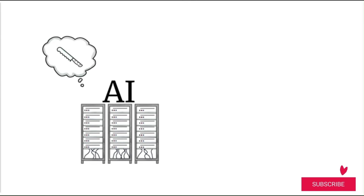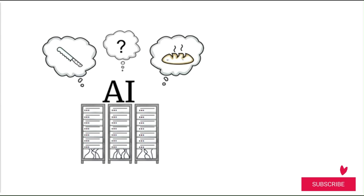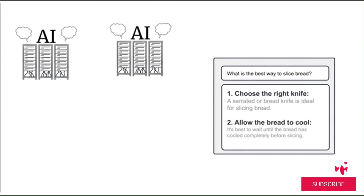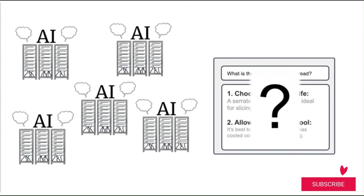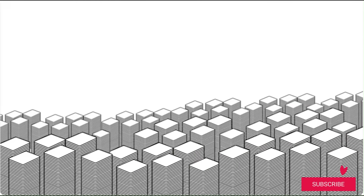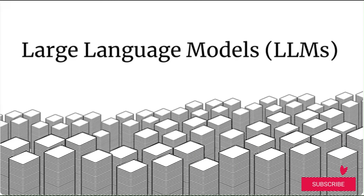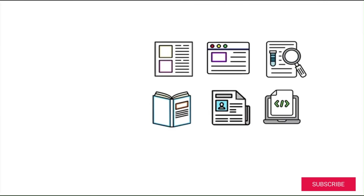The AI appears to know about types of knives and that bread is heated when cooked. Does AI really know these things? How can it know about so many topics? Can we trust the answers? To answer those questions, let's look at the source of the information used by tools like ChatGPT: large language models.